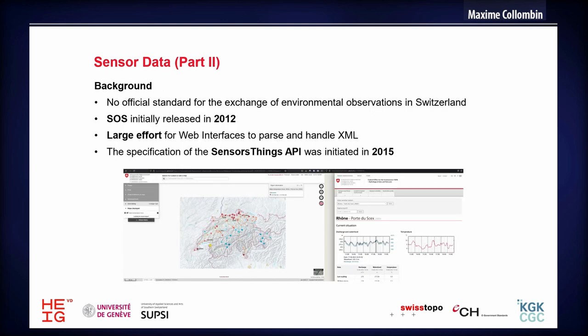Starting with sensor data, which was carried out by SUPSI. Currently in Switzerland, there is no official standard for the exchange of environmental observations. There are a few initiatives, such as the Federal Office of the Environment serving data through the National GeoPortal, allowing access to water temperature data in related items and features. Generally linked to the OGC SensorThings API, there is the SOS standard — Sensor Observation Services — which was first released in 2012.